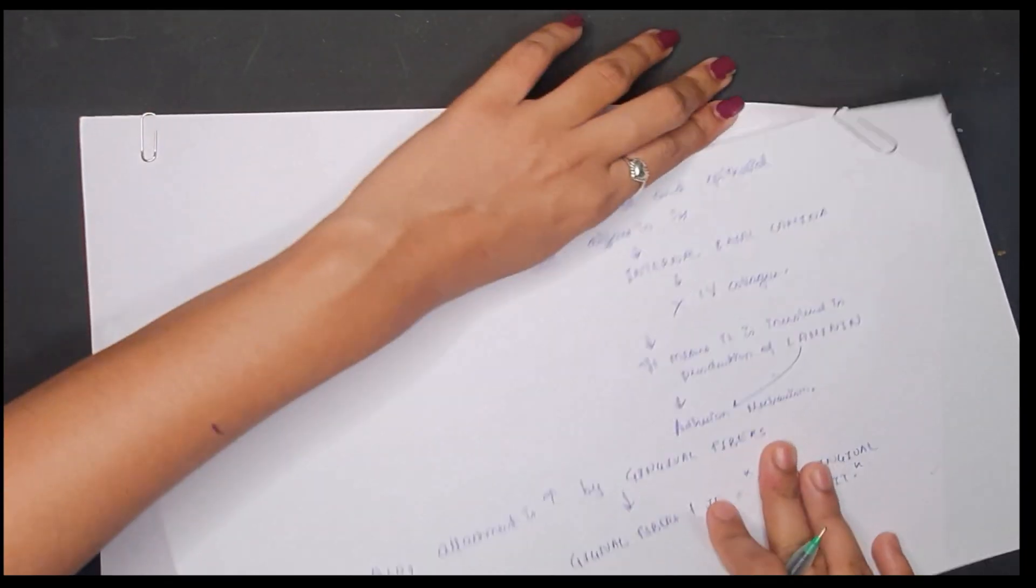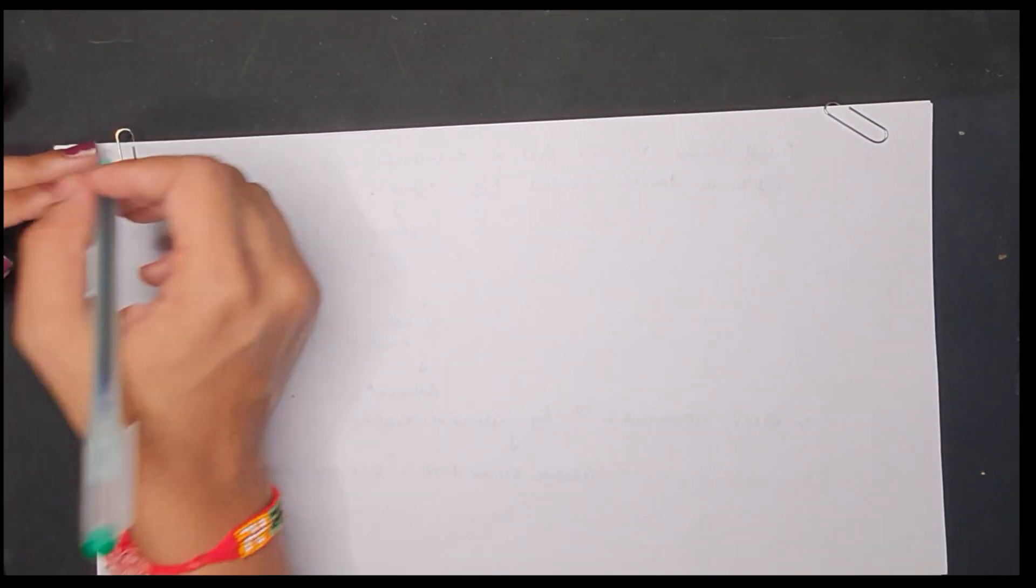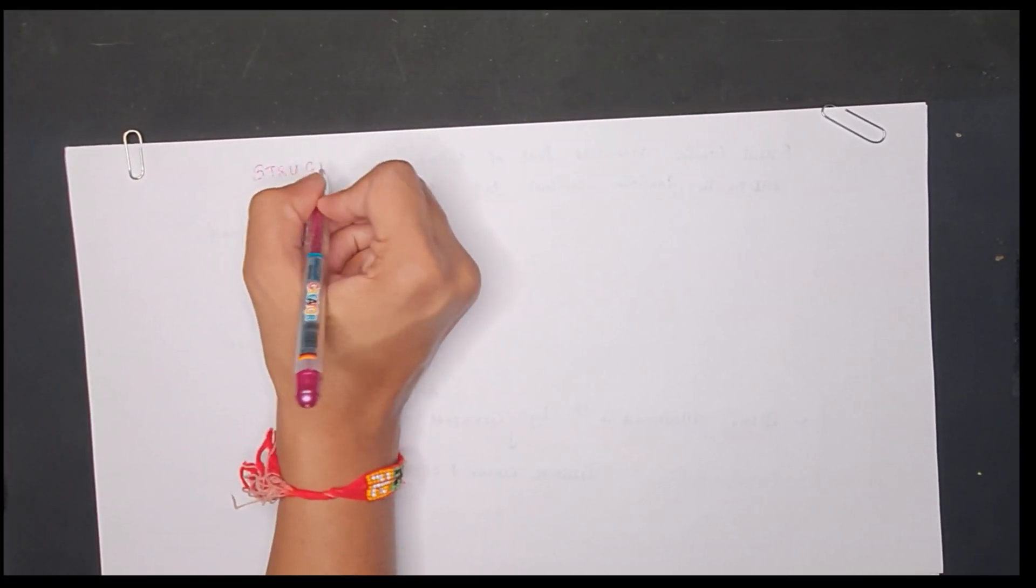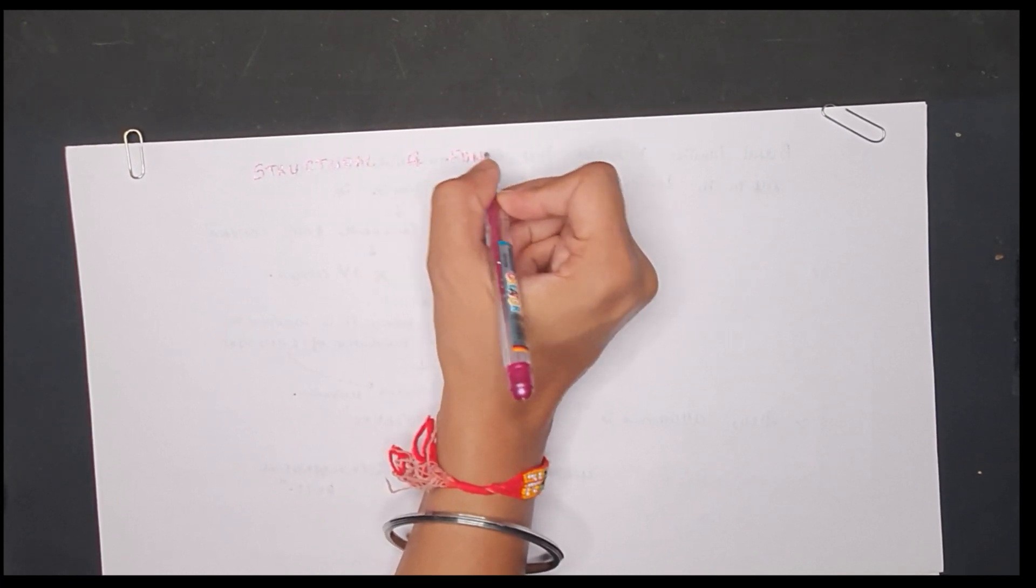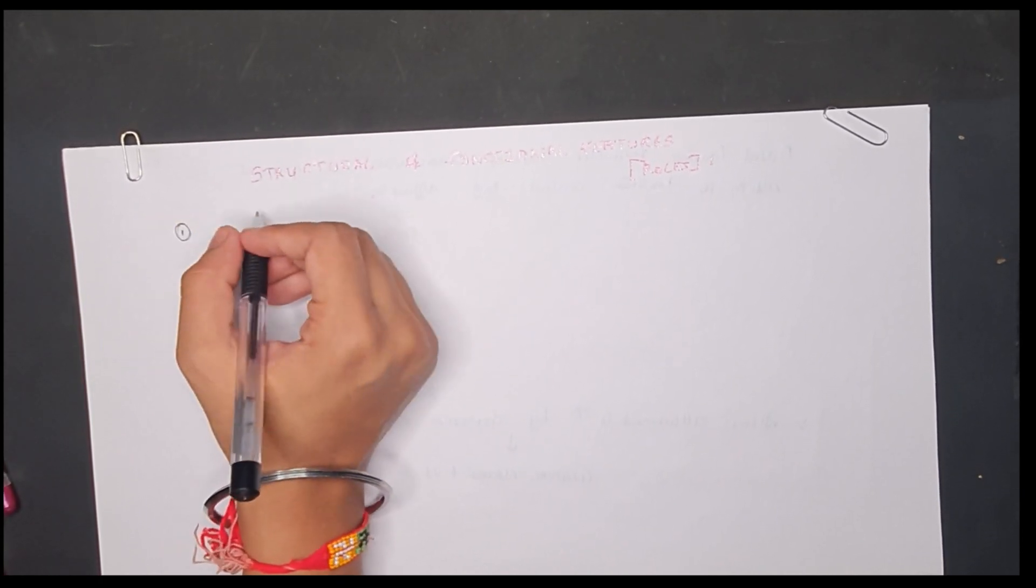Now let's discuss the structure and the functional features, or you can say role, of junctional epithelium in the oral cavity, because it is a very important part of the anatomy of the periodontium.